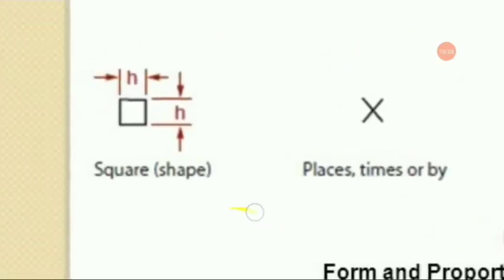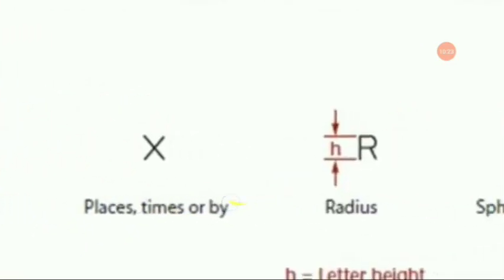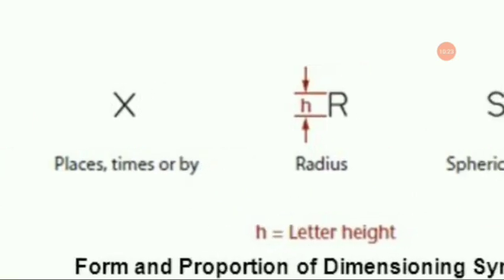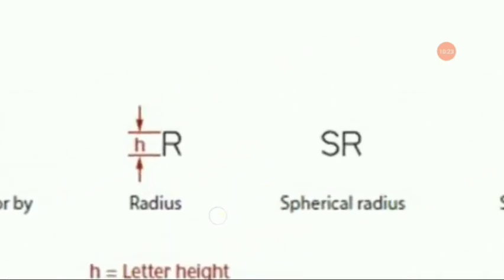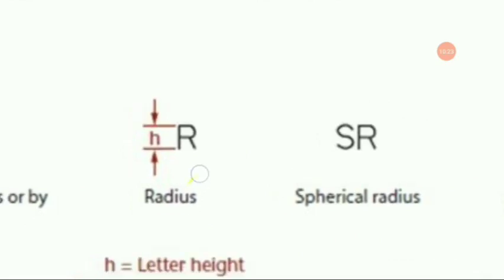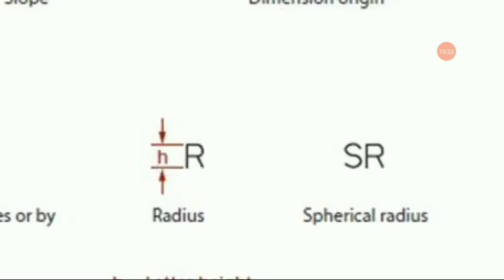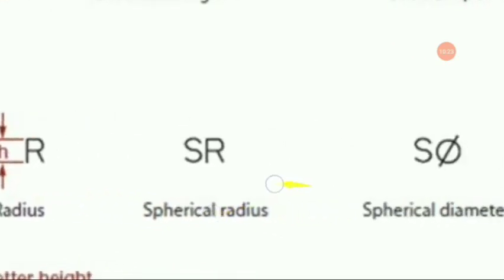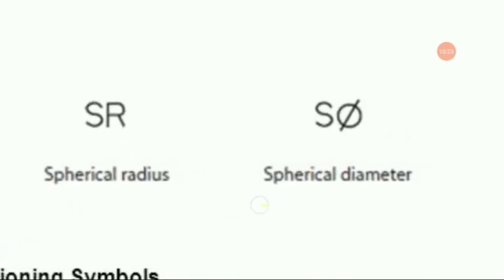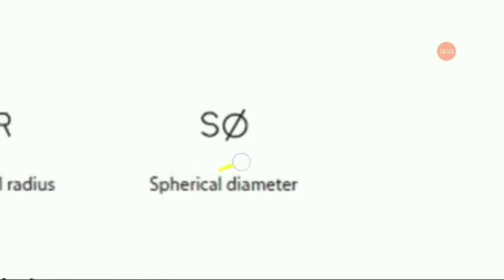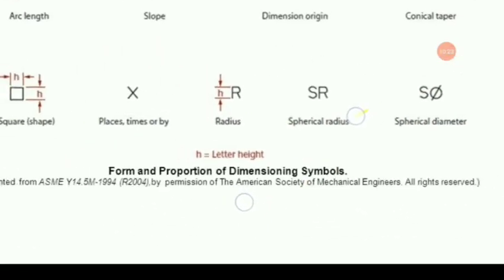For a square shape, dimensions are given accordingly. The symbol for places times or 'by' is also shown. For radius, it is denoted in abbreviated form as capital R with height given by H. Spherical radius is denoted as SR, and spherical diameter is given as S-phi. H is the letter height throughout these symbols.